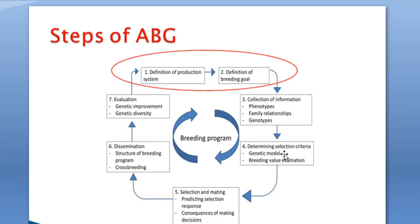Moving on to determining a selection criteria, which is concerned with the genetic model and breeding value estimation. Once the breeding value estimation is defined and determined, candidates for selection are ranked and the method of genetic improvement, along with the selection of mating, is decided upon.